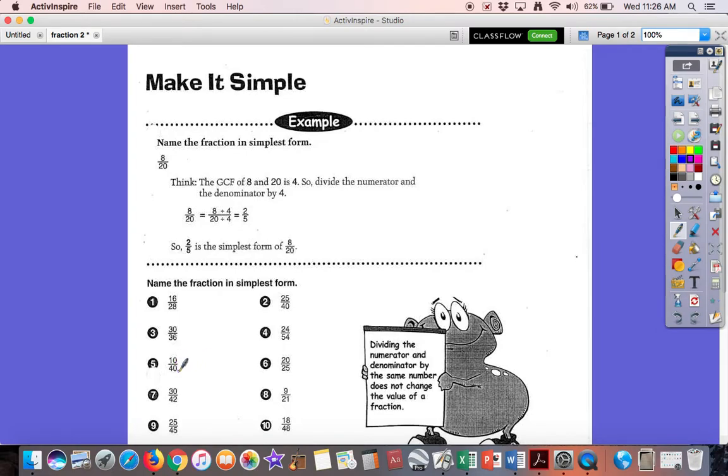Let's do an easy one. Let's do 10 and 40. 10 40ths. So what could we divide into there? We could divide 10. So we're dividing 10 into both of those. And then what do we have left? Well, we have 1. 10 divided by 10 is 1. 10 divided by 40 is 4. So this one is 1 fourth.